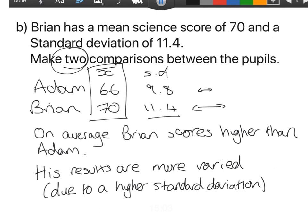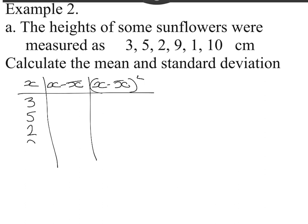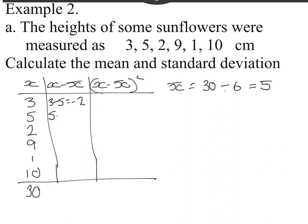Let's look at a second example. The heights of some sunflowers were measured as 3, 5, 2, 9, 1, 10 centimeters. Calculate the mean and standard deviation. I'm going to do my table again, just putting the numbers into the table, not bothering to put them in order at all. If I add up all that column, they come to 30. So step one is get your mean. My mean is 30 divided by six numbers, which is five. To the table's middle column, you do 3 take away 5 is minus 2, 5 take away 5 is zero, 2 take away 5 is minus 3, 9 take away 5 is four, 1 take away 5 is minus 4, and 10 take away 5 is five.